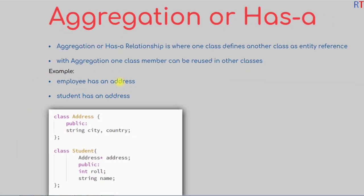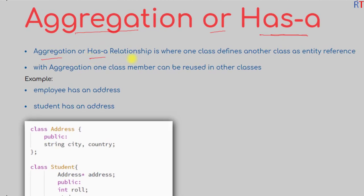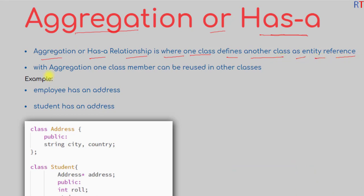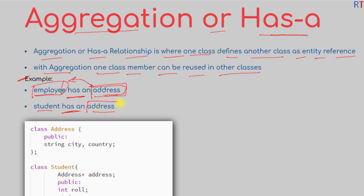In this video we're going to talk about aggregation, or the has-a relationship. Aggregation is where one class defines another class as an entity reference, and with the use of aggregation one class member can be reused in other classes. For example, an employee has an address, so because there is a has-a relation between address and employee, we can reuse the address class in the employee class. Similarly, a student has an address.